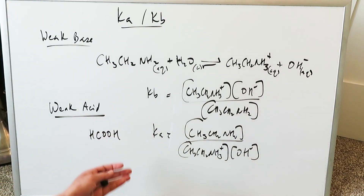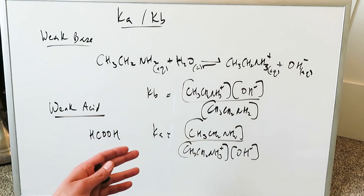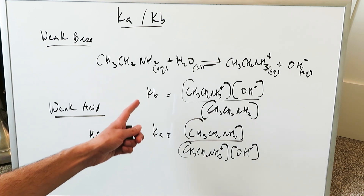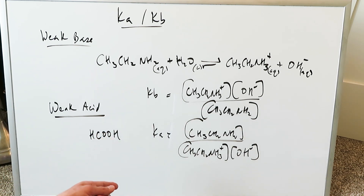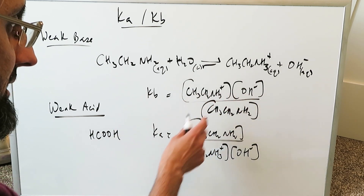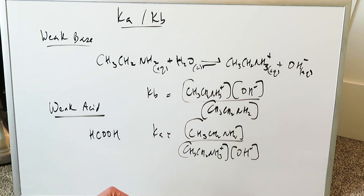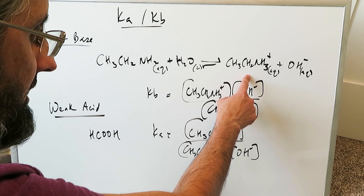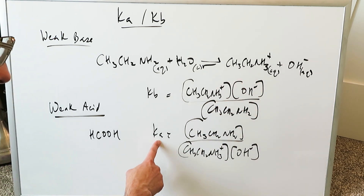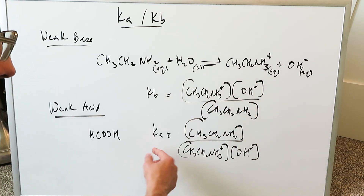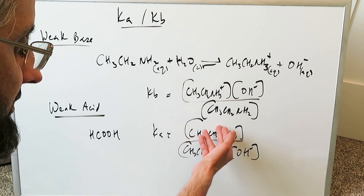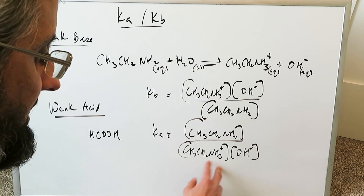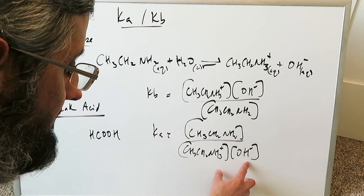Ka and KB are coming from the same parental equation, but based on the direction of that reaction, you're looking at one or the other — not both at the same time. The base dissociation constant looks at the dissociation of the base into conjugate acid and conjugate base. The acid dissociation constant looks at the generation of the base from the conjugate acid and conjugate base.